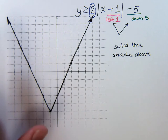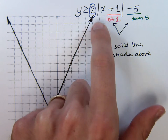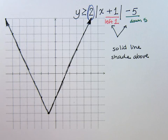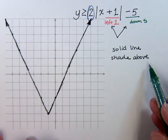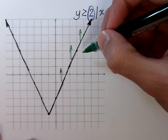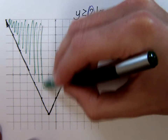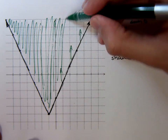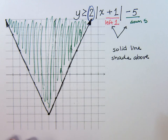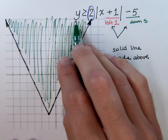This graph takes care of just the absolute value part — it does not take into account the inequality. It's solid; we've already taken care of that part. But we need to shade above. For this graph, being above means just going up from these points. So that indicates that we need to shade all of the stuff inside. Any point on the inside here should satisfy this inequality.